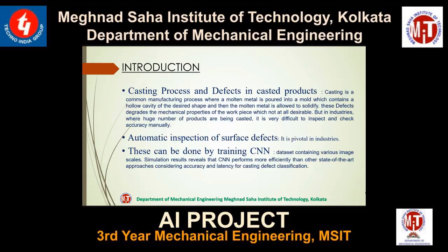Let's begin with the introduction. First we need to understand what we are doing and why we are doing it. Casting is a very commonly used manufacturing process where we pour molten metal into a mold and get the desired shape of the object when the metal solidifies. But like any other process, this is also not a perfect process.